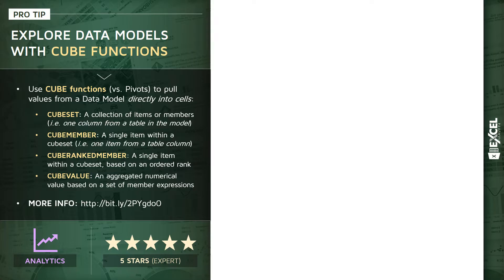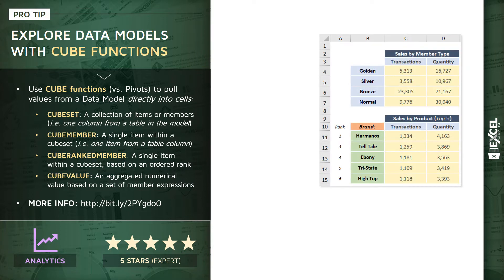The easiest way to explore data in a data model is through a pivot table or Power Pivot, but what cube functions do is allow you to pull or retrieve specific filtered values out of your data model and pull them directly into worksheet cells. For instance, you can use cube functions to create custom views like this. In my experience, there are four types of cube functions I use almost exclusively.